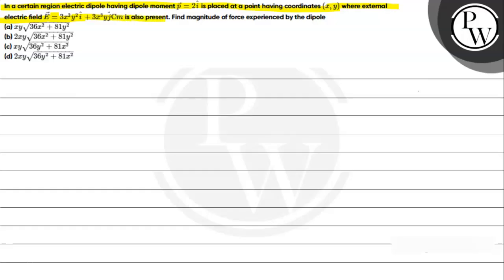Find magnitude of force experienced by the dipole. Option A: xy times square root of (36x² + 81y²). Option B: 2xy times square root of (36x² + 81y²). Option C: xy times square root of (36y² + 81x²). Option D: 2xy times square root of (36y² + 81x²).